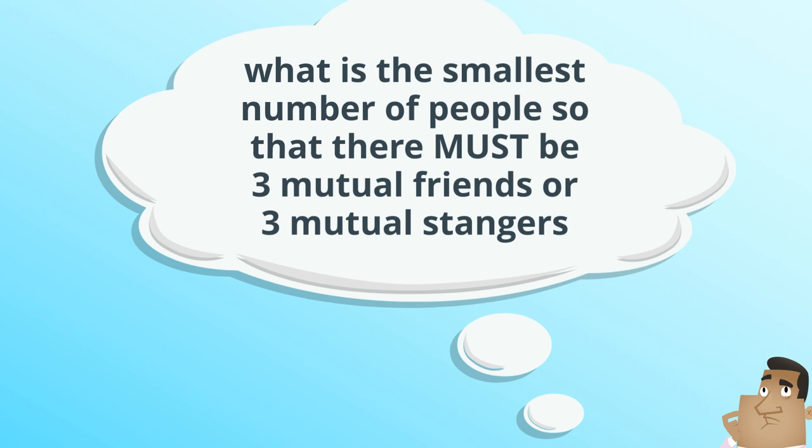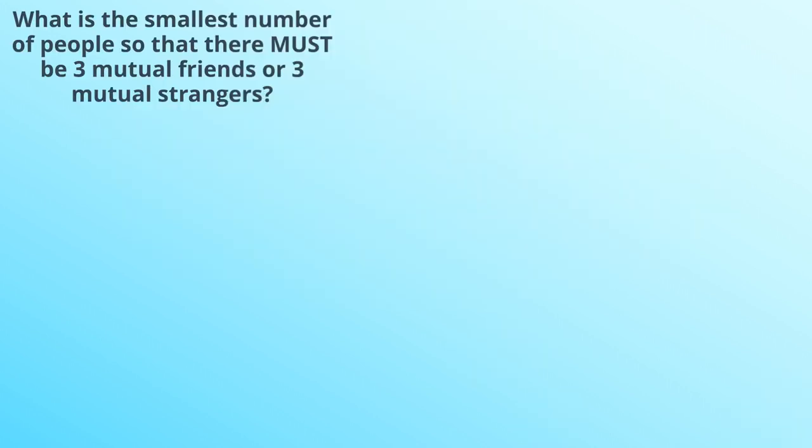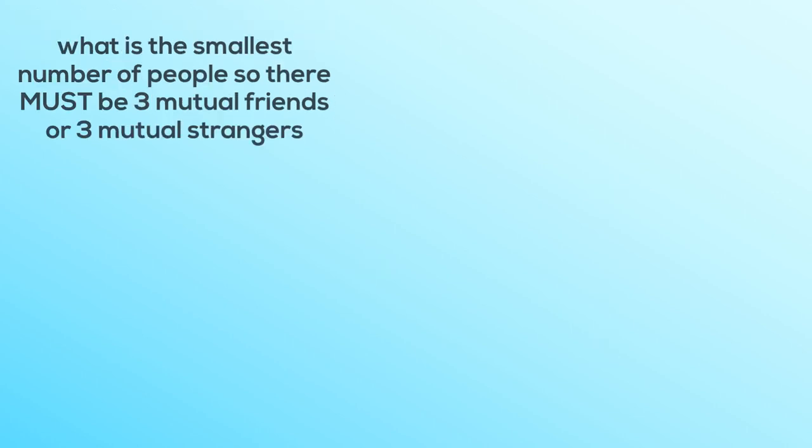The next thing is we've got the must. So we must have this situation. And at the top, the smallest number of people. So let's just start slowly on this. We're looking for the smallest number of people. So let's start with less than three people. Zero, one, or two people. And here we can see that this statement just can't be right. In fact, we can't have three mutual friends because we don't have three people. And we can't have three mutual strangers. So the answer to this question is clearly not zero, one, or two.